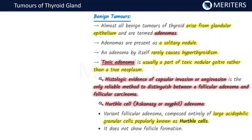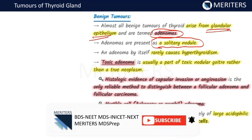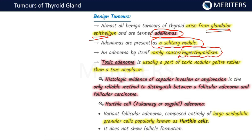About the benign tumors — almost all benign tumors of thyroid arise from the glandular epithelium and they are termed as adenomas. These adenomas are present as solitary nodules mostly, and adenoma by itself rarely causes any hyperthyroidism. In scintigraphy, you will find very little activity, or a cold nodule. Toxic adenoma is a part of toxic nodular goiter rather than a true neoplasm.